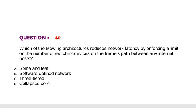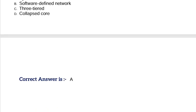Question: Which of the following architectures reduces network latency by enforcing a limit on the number of switching devices on the frame's path between any internal hosts? Option A, spine and leaf. Option B, software-defined network. Option C, three-tiered. Option D, collapsed core. Correct answer is Option A.